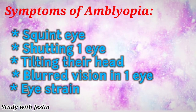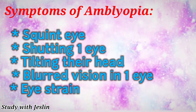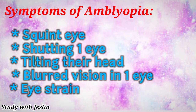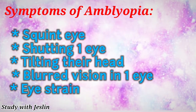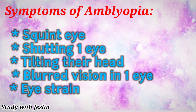Now we will look at the symptoms of amblyopia. First is squinting — one eye can be seen turning or squinting. There is also a shooting or wandering eye. Another symptom is tilting their head, which creates a shadow-like appearance on the face. There is also blurred vision in a single eye, and eye strain.